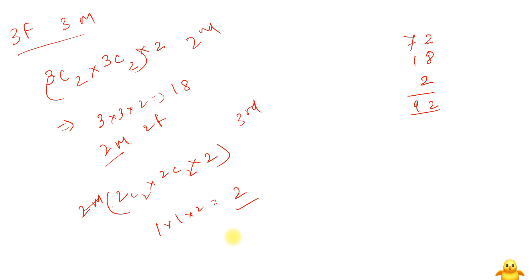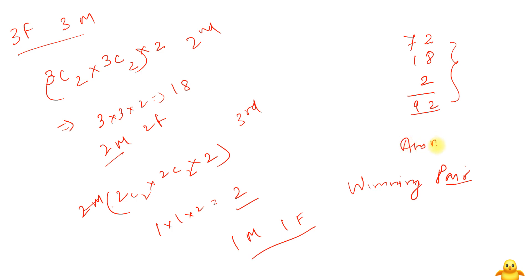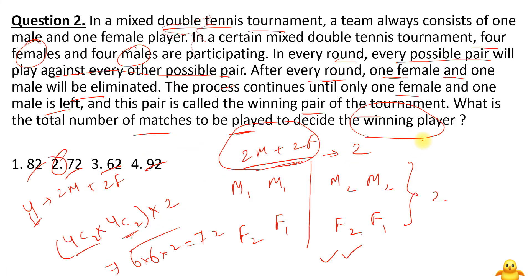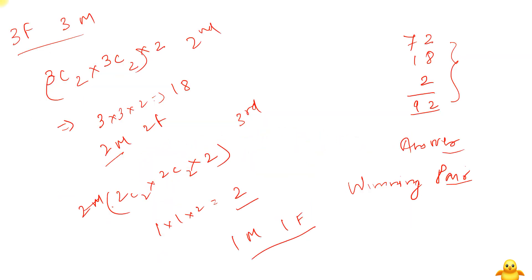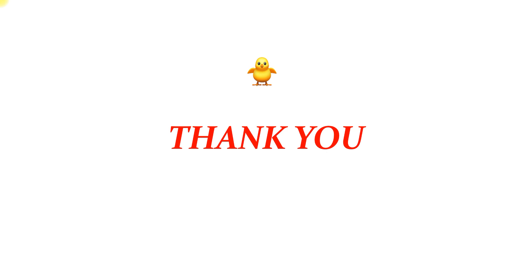Total matches = 72 + 18 + 2 = 92. After round three, one male and one female remain as the winning pair. So the answer is 92 matches. This was a tricky question requiring a systematic combinatorics approach. I will continue bringing such tricky questions and smart methodologies for CAT and MBA entrance examination preparation.